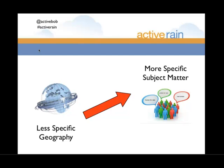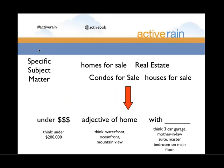Now, what about being less specific with geography and more specific with subject matter? On the geography side, getting very specific creates a somewhat finite number of posts you can write — you only have so many subdivisions, condo complexes, landmarks, universities, or employers. Eventually you'll feel like you've covered everything in your market from a geography standpoint. So maybe get less specific with geography and more specific with subject matter. For non-agents, this is where you should really be focusing.